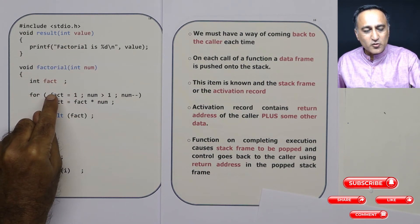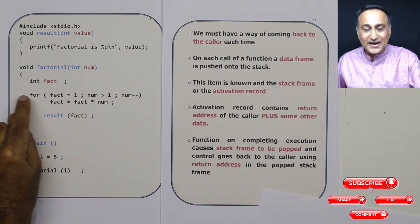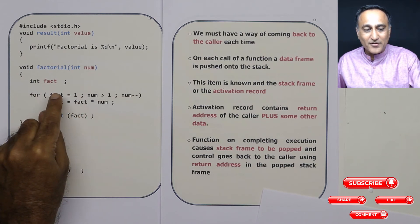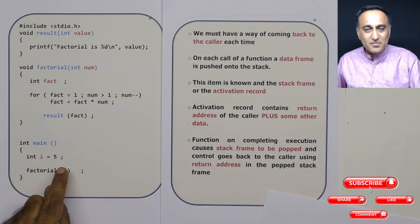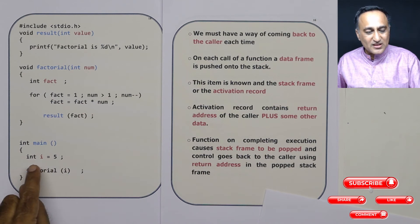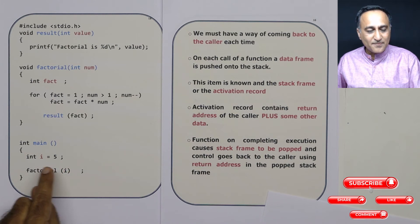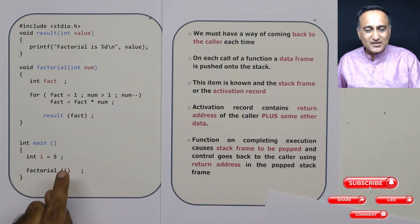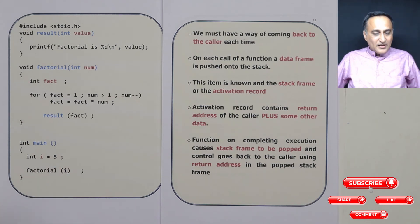When factorial completes execution, using the return address stored in the activation record of factorial we are able to come back to main. When main is done, using the return address of where it should go into the operating system — which is stored in the activation record of main — that is used when main is popped out.